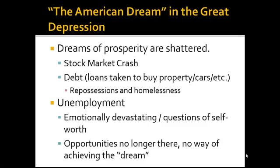But during the Great Depression, the idea of the American dream was largely shattered. These dreams of prosperity ended with the stock market crash, where people who had become wealthy by investing were suddenly left with nothing. Debt led to repossessions — people had taken out loans to buy houses, farms, and cars, and when they were unable to pay those loans, those homes were taken away by the banks. So repossessions and homelessness became widespread problems in the early 1930s. The high levels of unemployment also broke this idea of the American dream. People started questioning their self-worth, but ultimately there were simply no opportunities the way there had been before the Depression. The American dream for many became the American nightmare of simply trying to survive without a job or money.